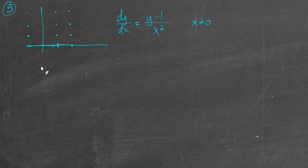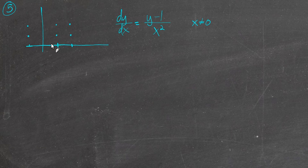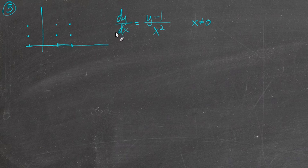Alright, so we'll start with number 5 and we'll draw this slope field. Just remembered that we're not supposed to have those points, so we're going to go up to y is 2. So negative 1, 2 is the point that we're at on the slope field. Just a reminder that this is dy/dx, the derivative of some function for all intents and purposes.